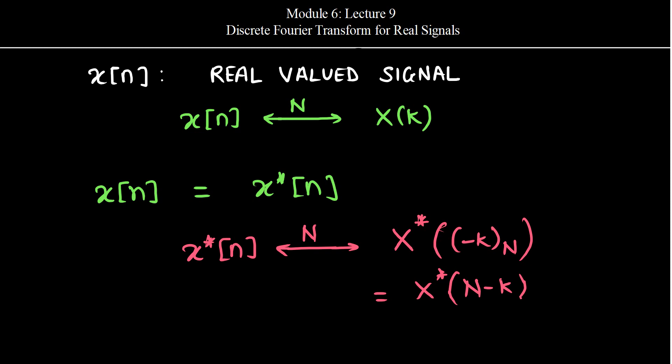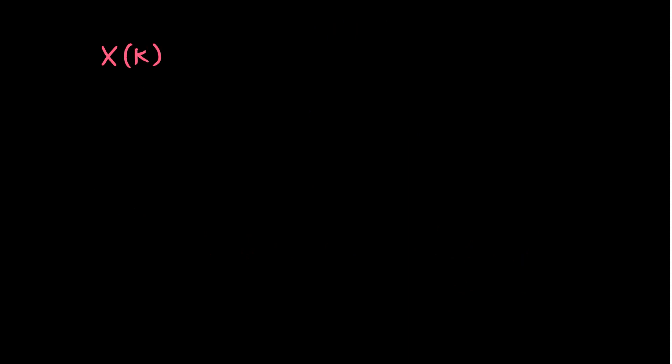Now since x(n) is equal to x*(n), their Fourier transforms will also be equal. Therefore X(k) is equal to X*((N-k)). So this is the first property that we have for real signals.